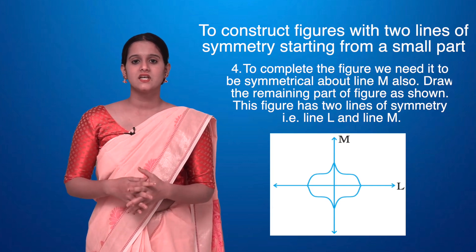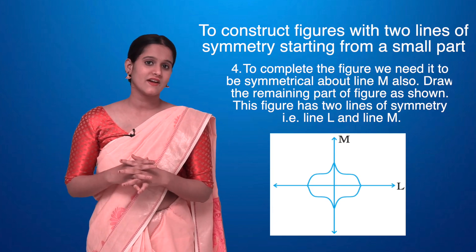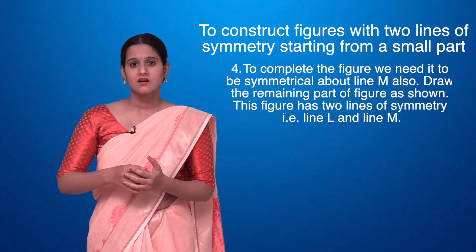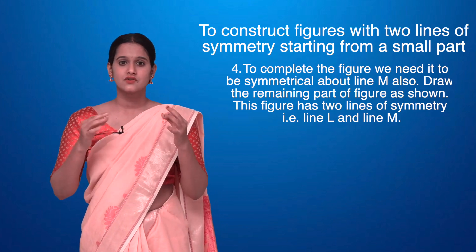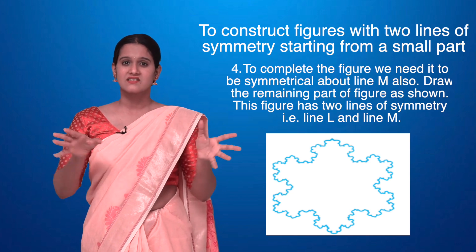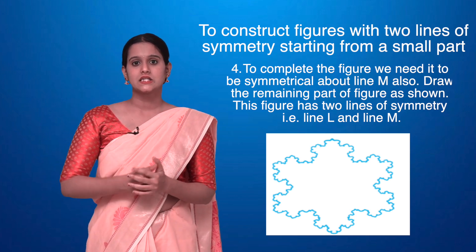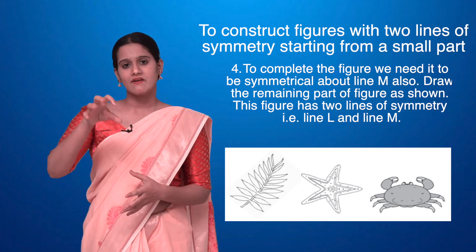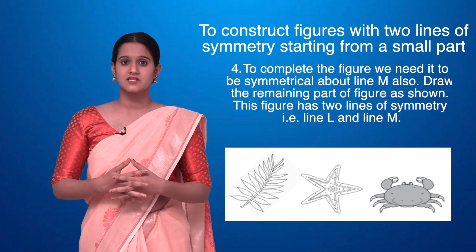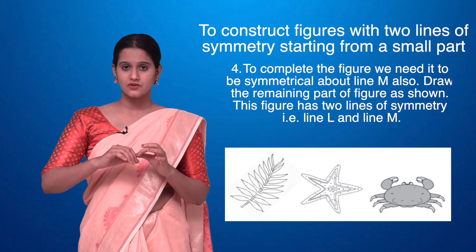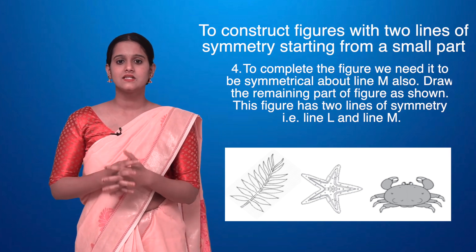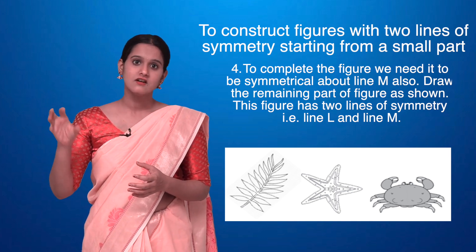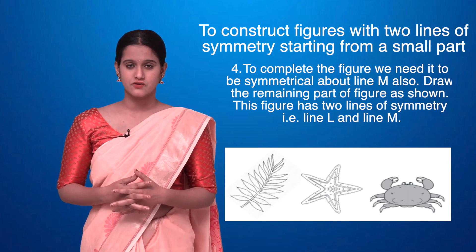Symmetry is not only in geometry or mathematics — symmetry is everywhere. Road signs like straight, U-turn, and turn signs, as well as hexagonal signs, are all examples of symmetry. Even in nature there are plenty of shapes with symmetry. A crab, leaves, and starfish are all examples of symmetric objects where you can draw a line of symmetry.